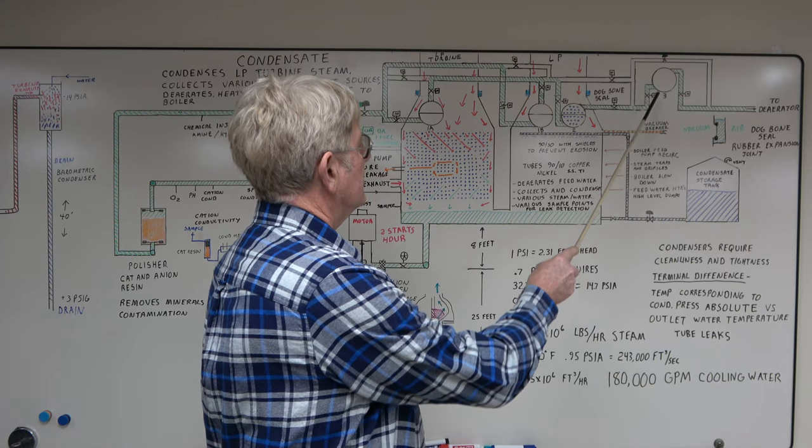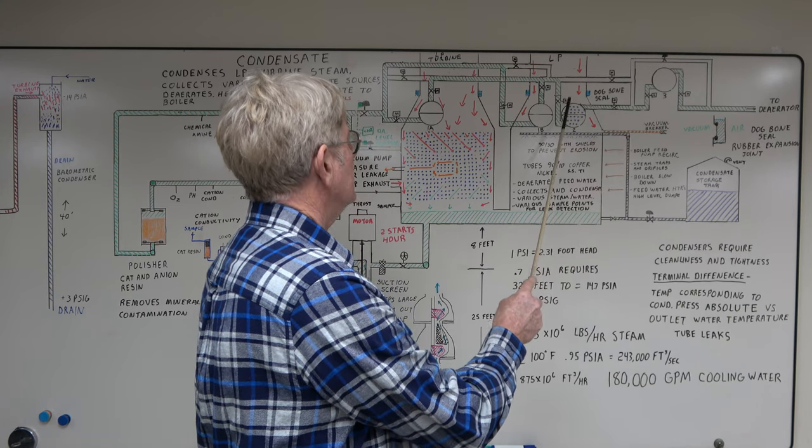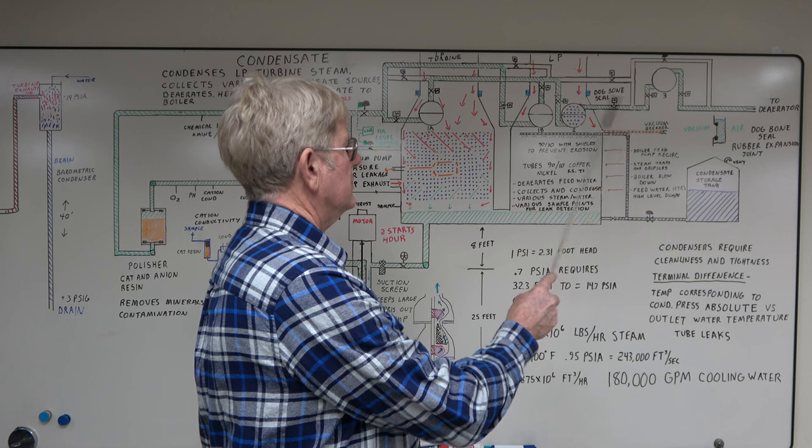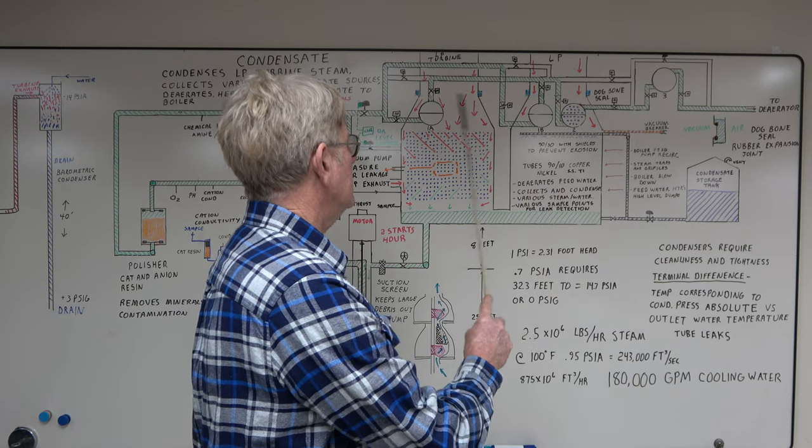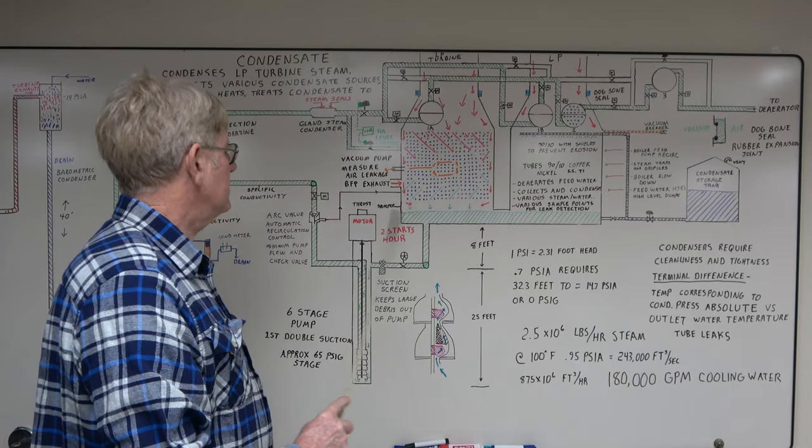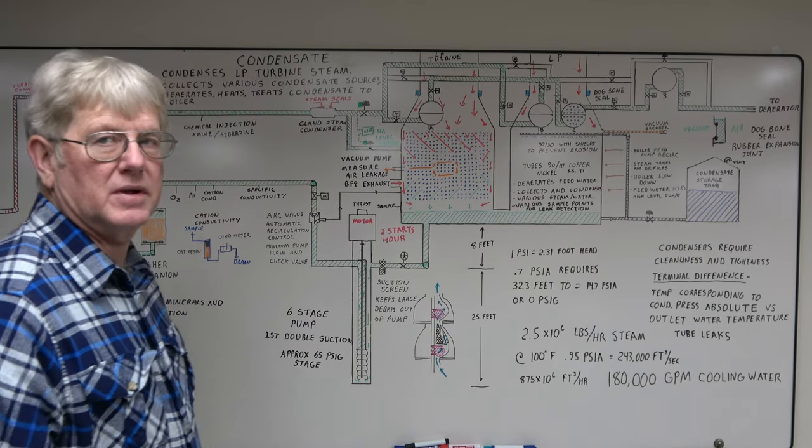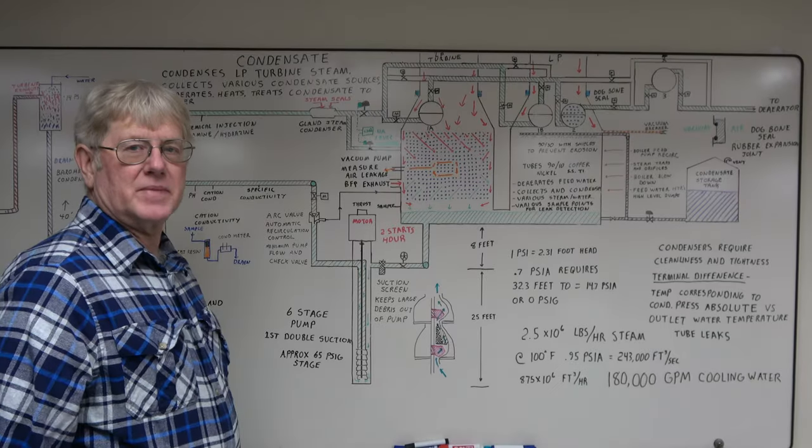The condensate comes out of feed water heater 3, goes to feed water heater 2. There's still heat that can be extracted from feed water 2. Then it goes to 1A, 1B. Extracts more heat out of the water, and then it's returned back to the surface condenser.